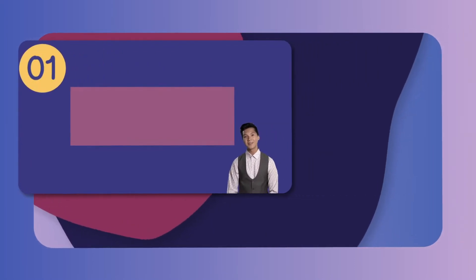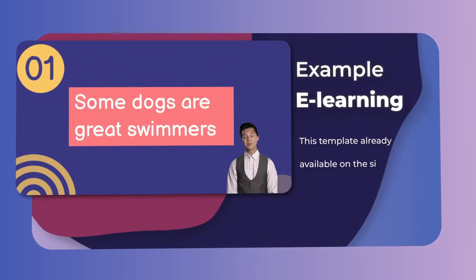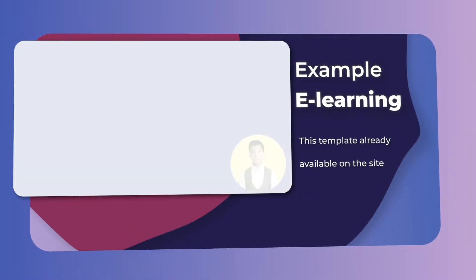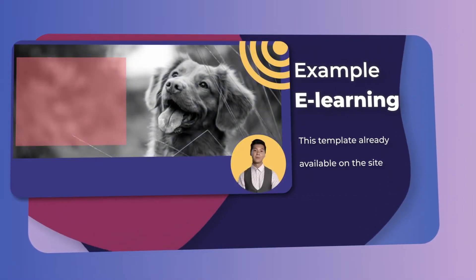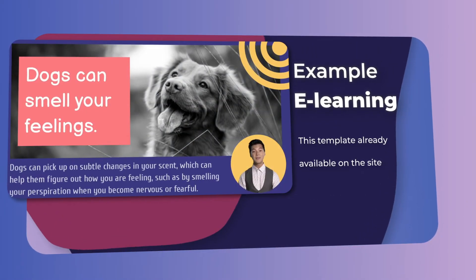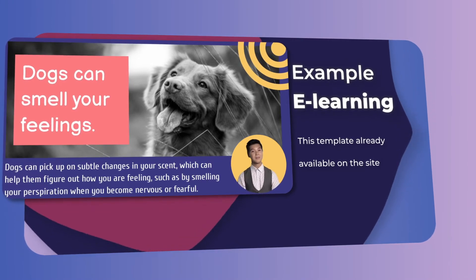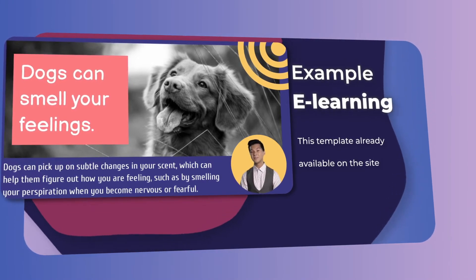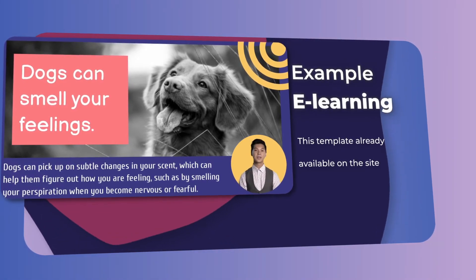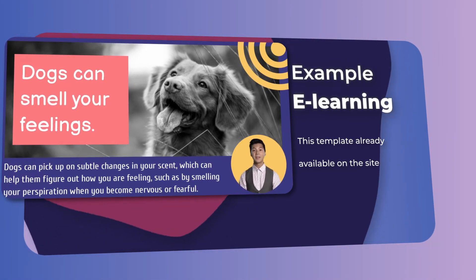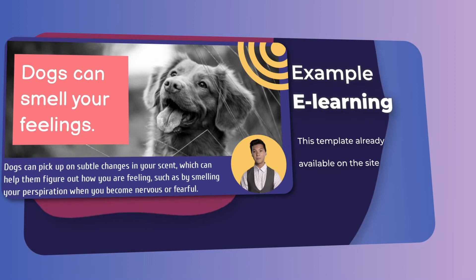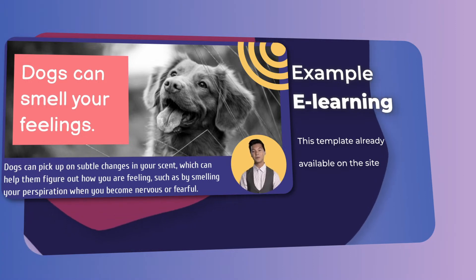Did you know that some dogs are incredible swimmers? One more amazing fact about dogs is that they can smell your feelings. Dogs can pick up on subtle changes in your scent, which can help them figure out how you are feeling.